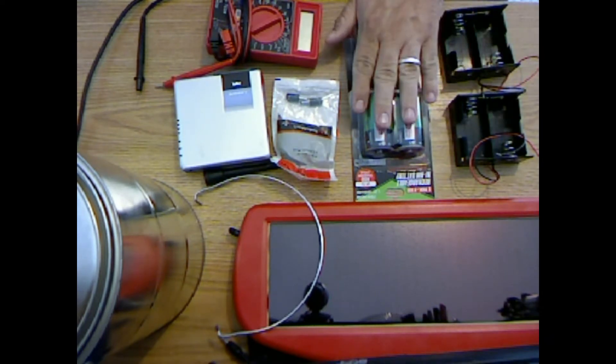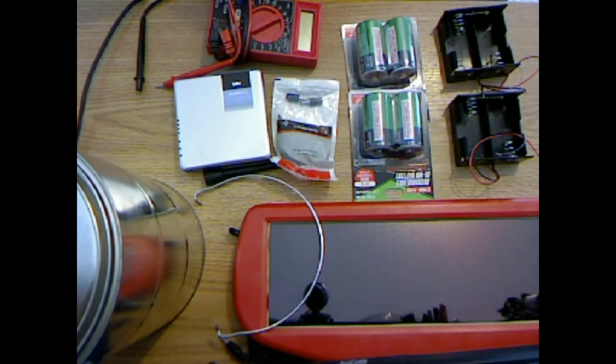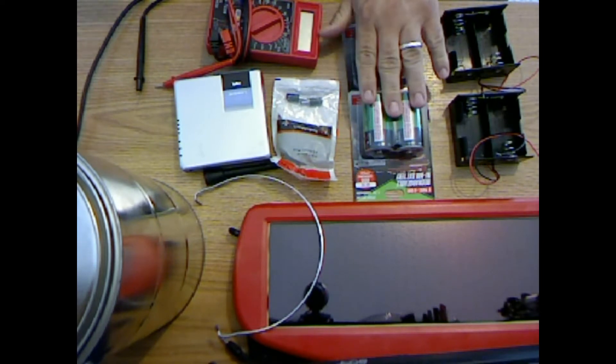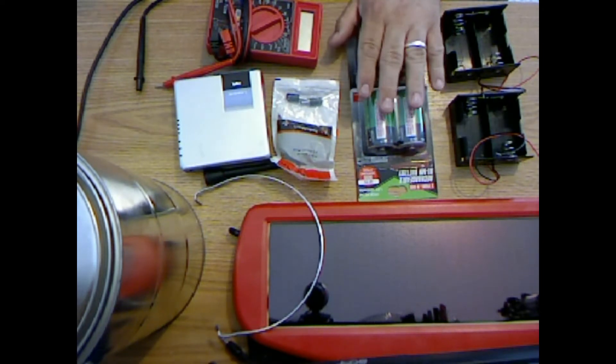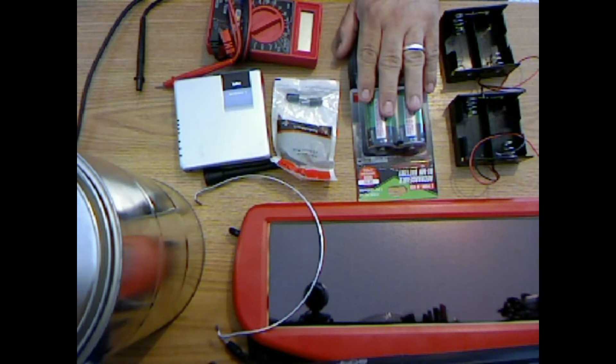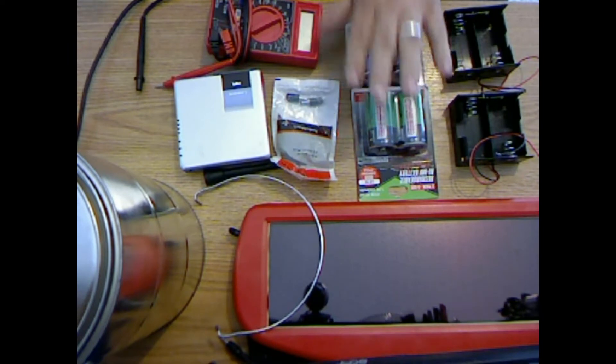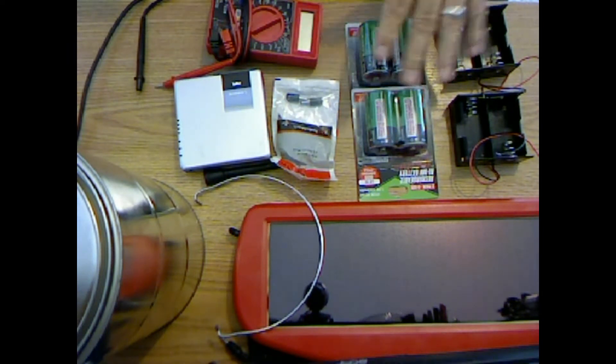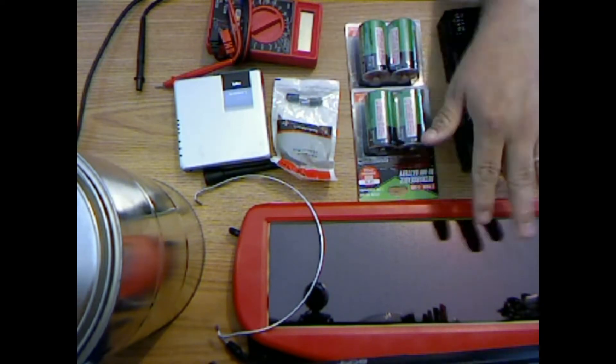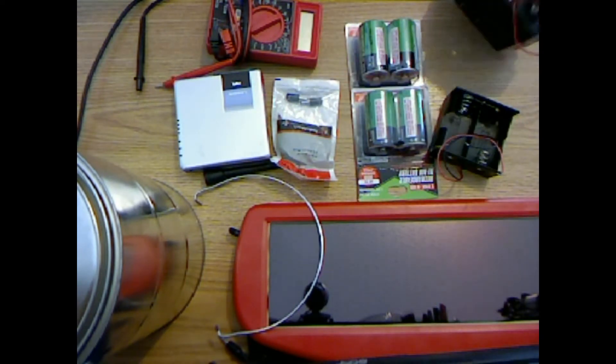I got the batteries I picked up at Harbor Freight. They are 1500 milliamp hours each. So that's going to give us 6000 milliamp hours of power, which will act as a flywheel when the sun goes down or clouds go over the solar panel.